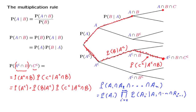And this is the most general version of the multiplication rule, which allows you to calculate the probability of several events happening by multiplying probabilities and conditional probabilities.